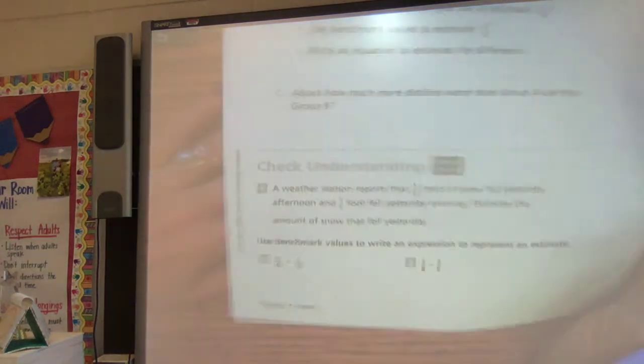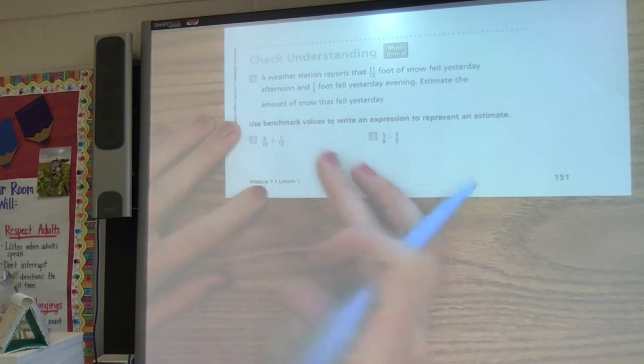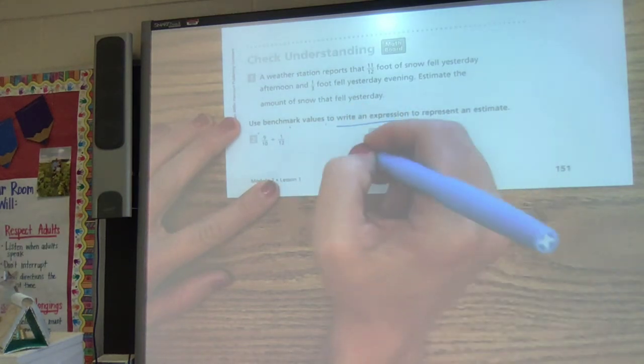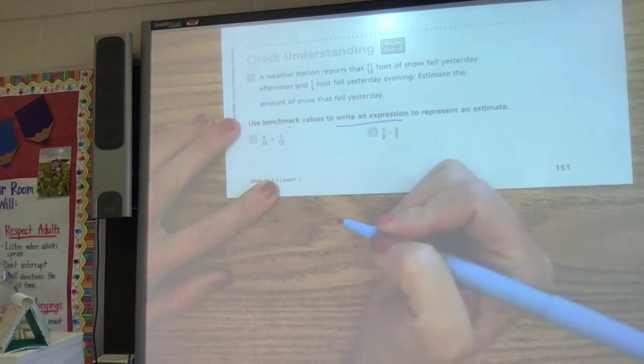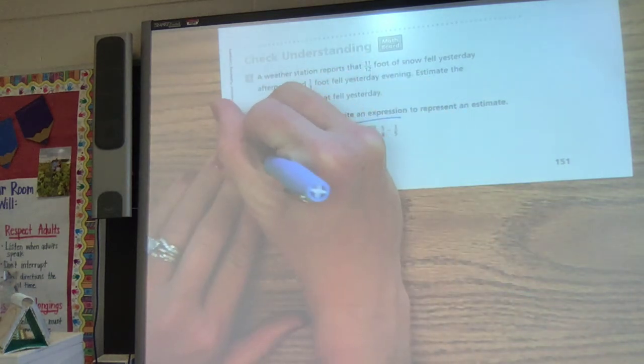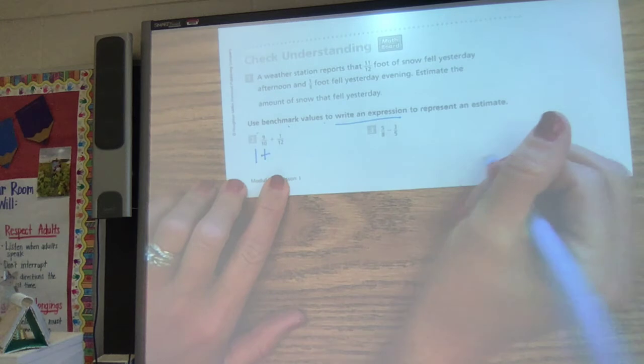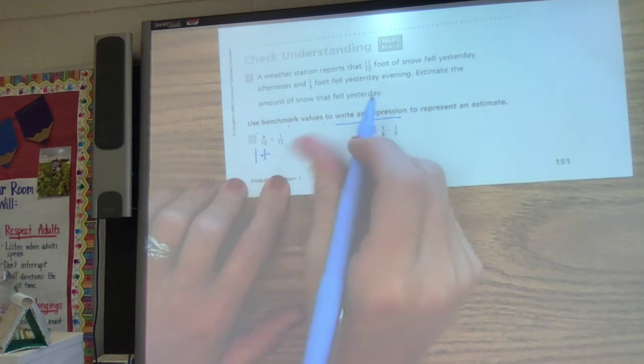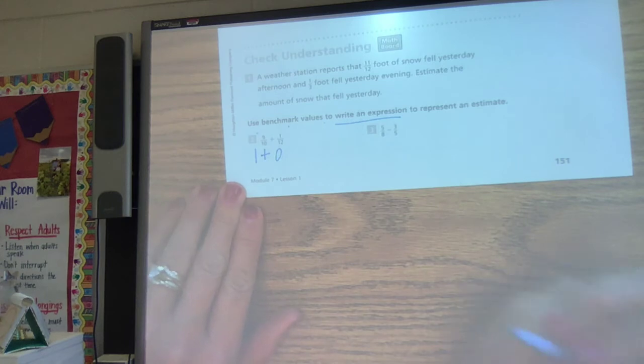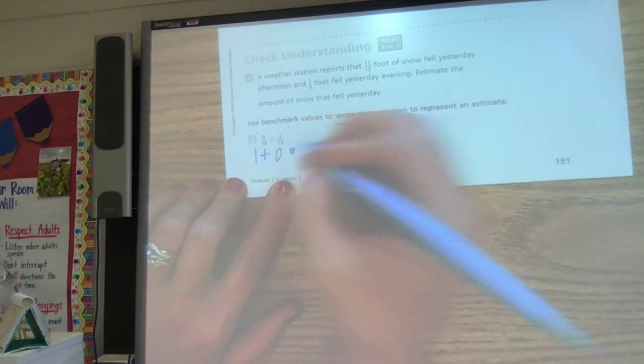Okay. Now let's go to page, let's look at page 151. I'm going to look here at the bottom. It says use benchmark values to write an expression to represent an estimate. All we're doing is writing an expression to represent an estimate. Nine tenths. We should be able to look at that and say nine tenths is almost ten tenths. Almost a whole. So I'm going to round that to one. Well, I put a plus out. And then one twelfth. Let's think about that. If I only have one out of something where I have 12 pieces, I don't have very much. So I'm going to round that to nothing. So my estimate, really I just need to do an expression, would be one plus zero.